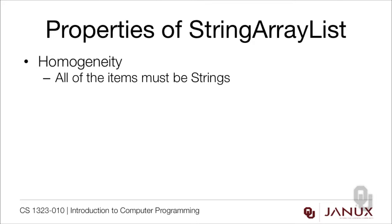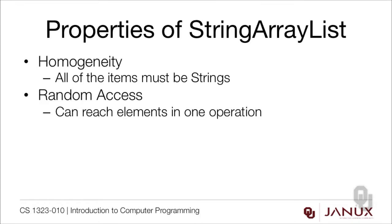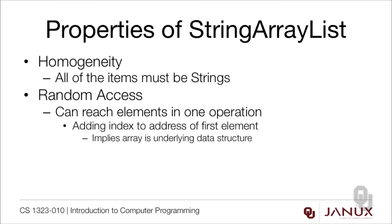The first property is homogeneity, meaning all items need to be strings. Then we need random access — this is a property we haven't talked about much. It means we can reach any element in the ArrayList in one operation. When you have an array, adding the index to the address of the first element jumps you to that position. So when people say random access, what they mean is that the array should be the underlying data structure.